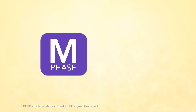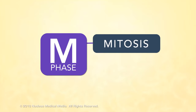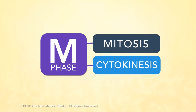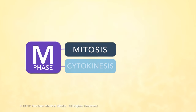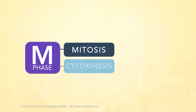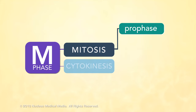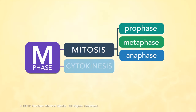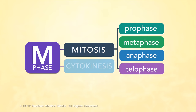Cell division includes division of the nucleus, called mitosis, and division of the cytoplasm, called cytokinesis. Mitosis is further broken down into four phases: prophase, metaphase, anaphase, and telophase.